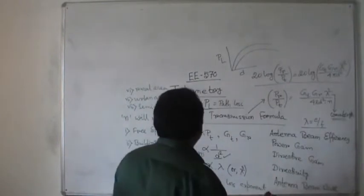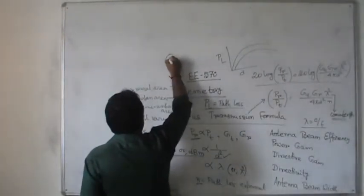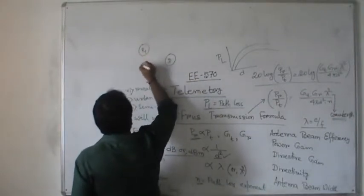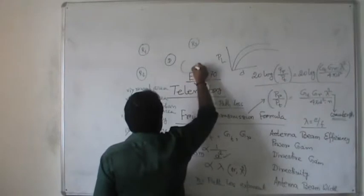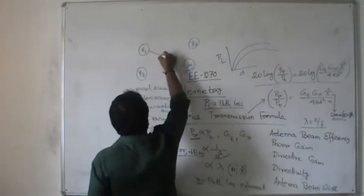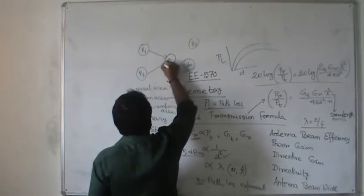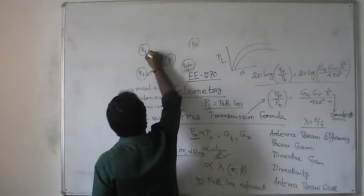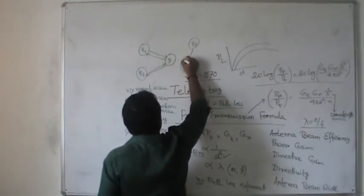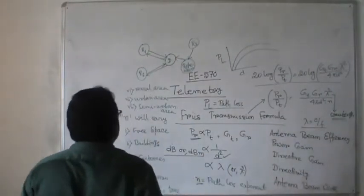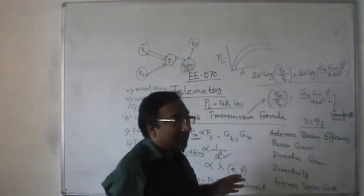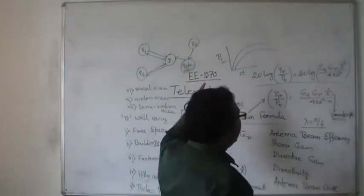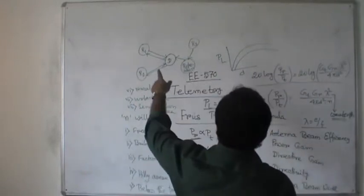Suppose there are three remote stations R1, R2, and R3, and this is the destination D. The signal can come from R1 to R2, from R2 to R3, or go directly. In this case, it will come to the repeater and go to the destination. If a station does not find the destination as a free one, then only the repeater will come into action — the signal will go first to the repeater and then to the destination.